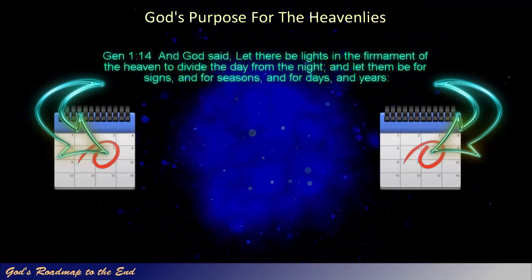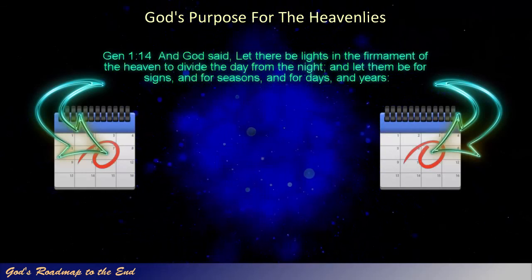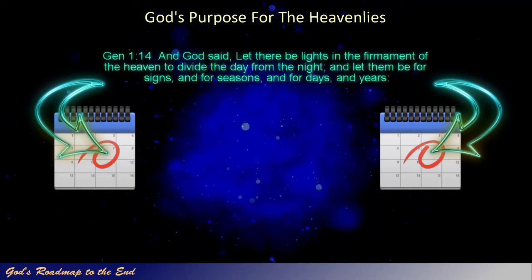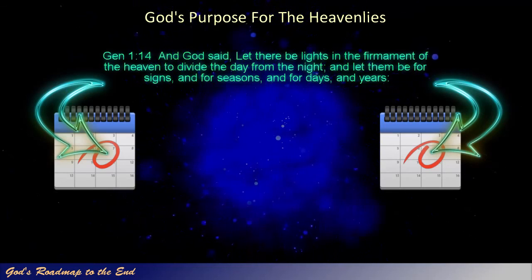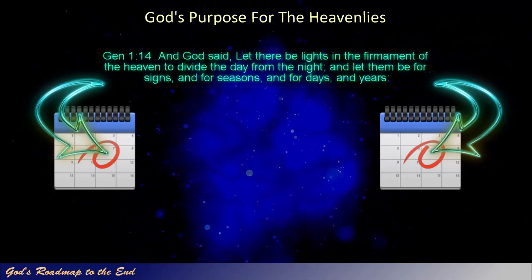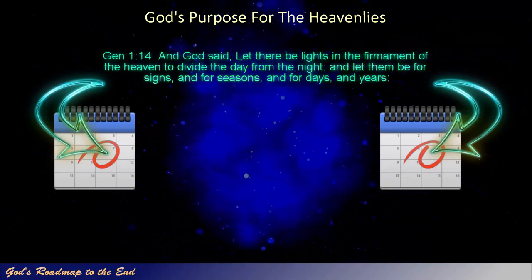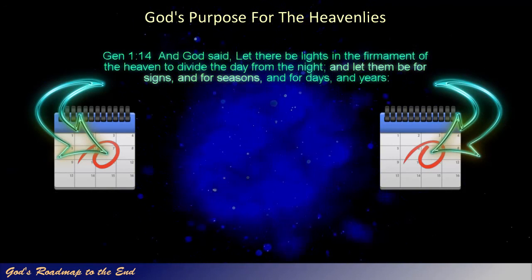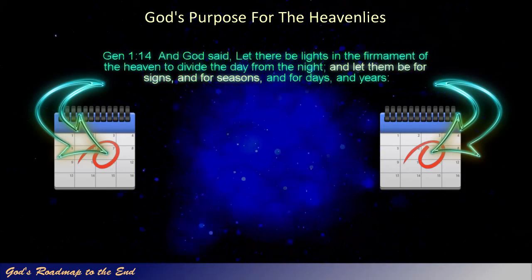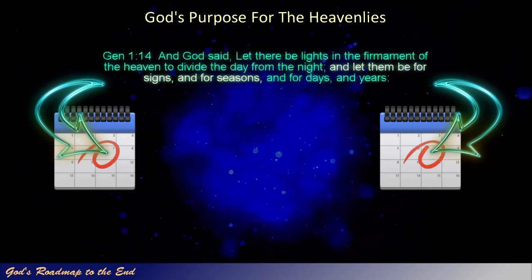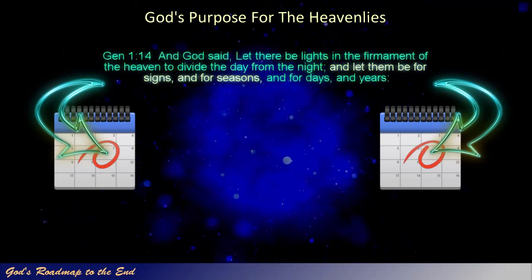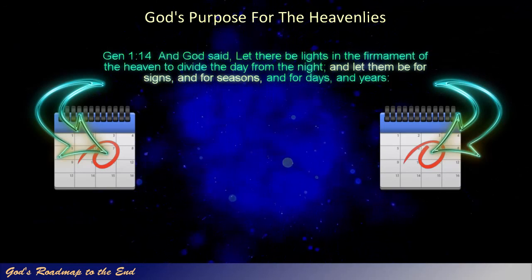Genesis 1 verse 14: 'And God said, Let there be lights in the firmament of the heaven to divide the day from the night, and let them be for signs, and for seasons, and for days, and years.' In this verse you will note that the order in which God assigns his purpose for the lights in the heavens positions the function of acting as signs and for seasons before that of measuring out days and years. Their primary purpose can therefore be seen as markers that point out or signal specific events.